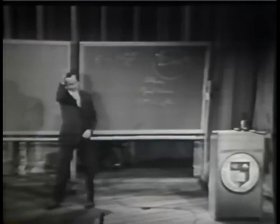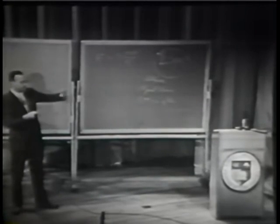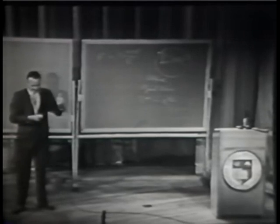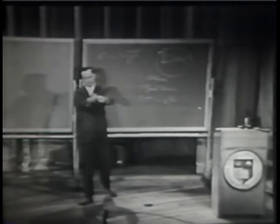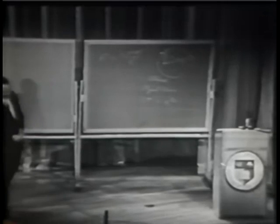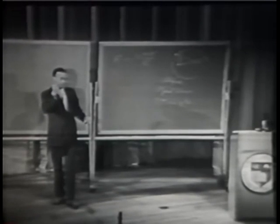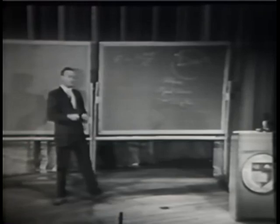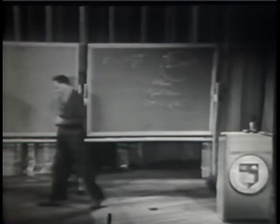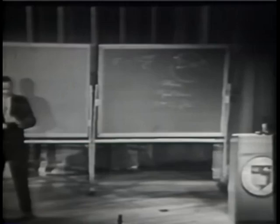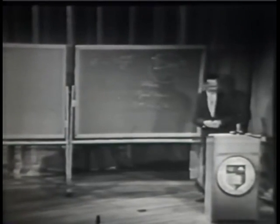If one has a stone on the end of a string and swings it in a circle over one's head, one finds one has to pull. The reason is that the speed is not changing as it goes around the circle, but the direction is changing, so there must be a perpetual in-pulling force. This force is proportional to the mass, so swinging two different objects at the same speed and measuring the force gives a way of measuring their relative masses — by how hard it is to change the speed.